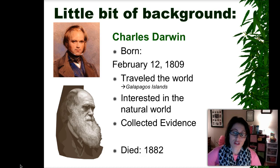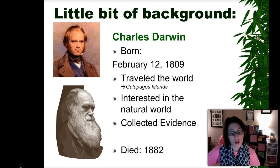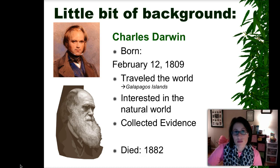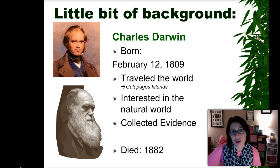A little bit of background about Charles Darwin. He is actually the person who coined the term natural selection or evolution. He wrote a book called Origin of the Species. He was born in 1809 and he was famous because he traveled the world on a ship called the HMS Beagle. His role on the ship was to collect evidence, collect specimens, fossils, and draw out organisms that he may have seen as they traveled around the world.